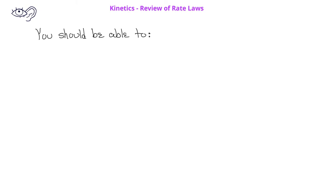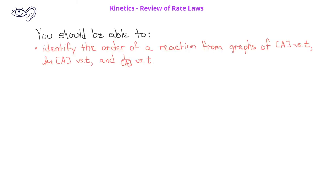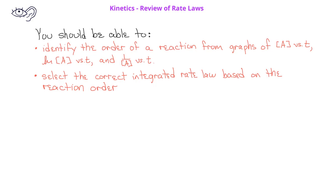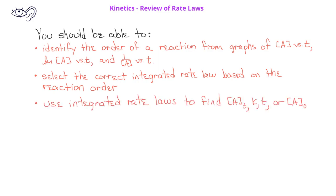By now, you should be able to identify the order of a reaction from graphs of concentration versus time, natural log of concentration versus time, and reciprocal of concentration versus time. You should also be able to select the correct integrated rate law based on the order of the reaction. Finally, you should be able to use the integrated rate law to find the concentration of a reactant at time t, or the rate constant, or the time, or the initial concentration, depending on which values are given and which the problem asks you to determine.